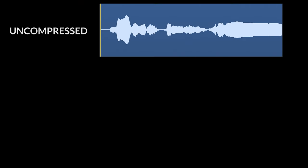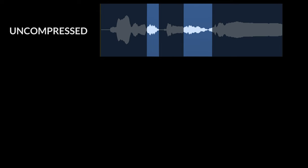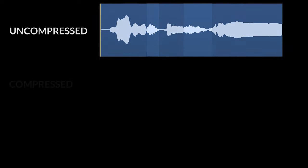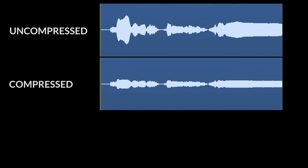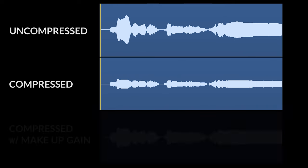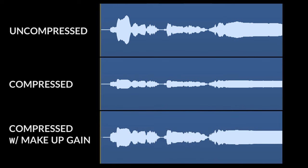Here is the original unprocessed waveform of our vocal track. You can see how there is a big difference between the loudest and softest parts. Now look at our vocal after we've applied compression. There is less of a difference between the loudest and softest parts. Finally, here is how it looks after we've applied some makeup gain.